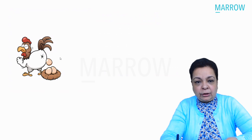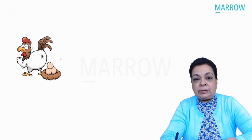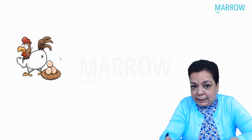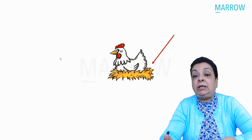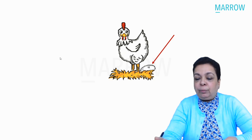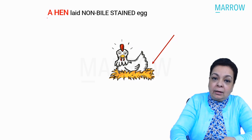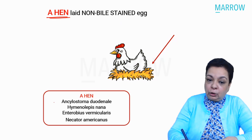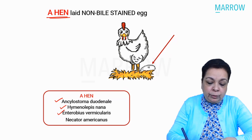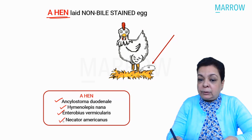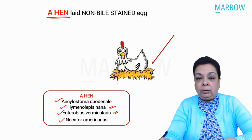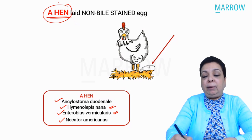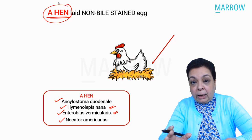Most eggs passed in stool are bile-stained. The mnemonic for non-bile-stained eggs is 'A HEN': Ankylostoma duodenale, Hymenolepis nana, Enterobius vermicularis, and Necator americanus — both hookworms, the dwarf tapeworm, and the pinworm. These eggs do not take up the brown color of bile salts.